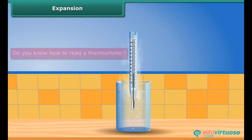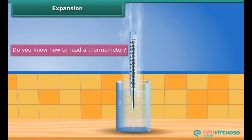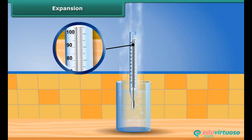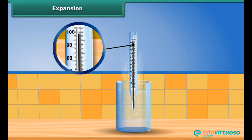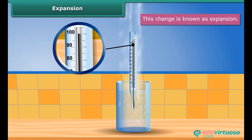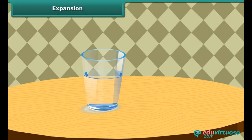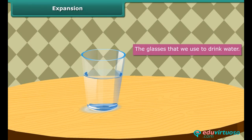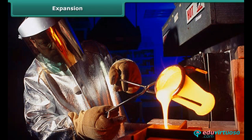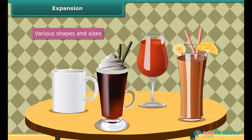Expansion. Do you know how to read a thermometer? The thermometer shows the temperature when the mercury inside it expands. Since there is a change in the state of the mercury, the thermometer is able to display temperature. This change is known as expansion. The glasses that we use to drink water are moulded when the glass is heated, and workers use the molten glass to mould it into various shapes that we use daily.